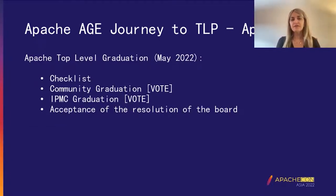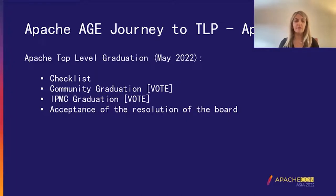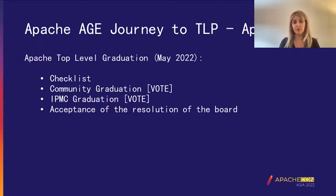Apache AGE went through the graduation process in May 2022. To become a top-level project, we had to successfully complete some tasks. We went through the checklist to make sure we had everything it takes — all the requirements, licensing, trademarks — everything aligned with Apache requirements. After that, we opened a community vote.